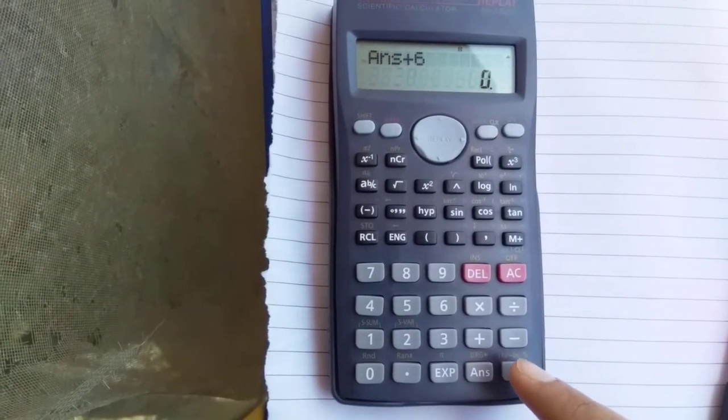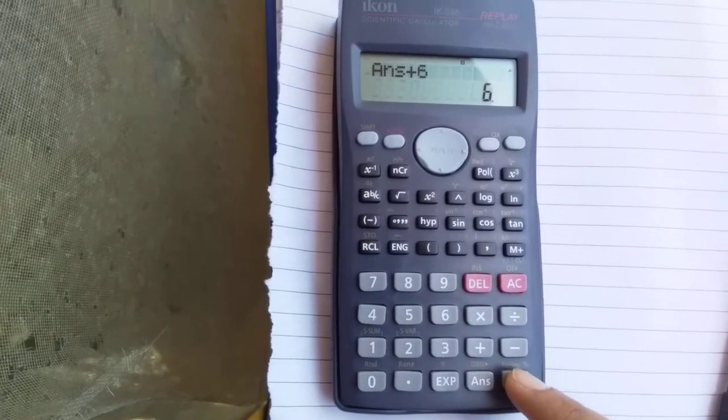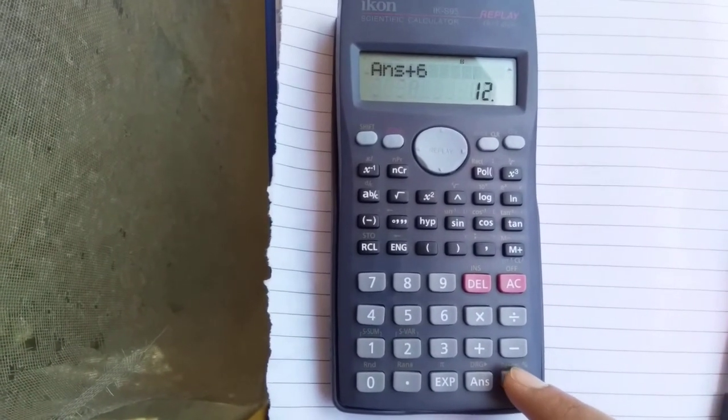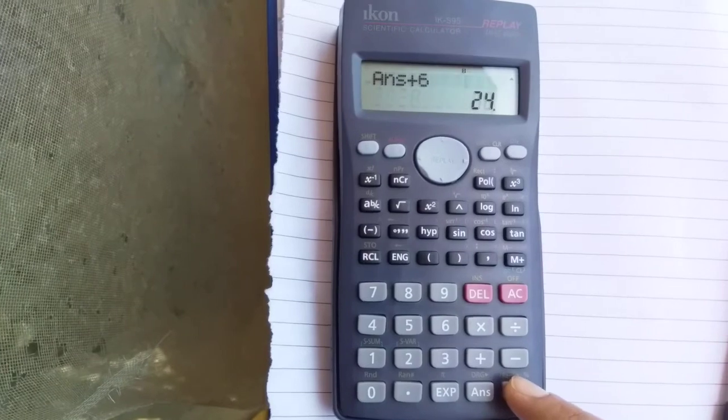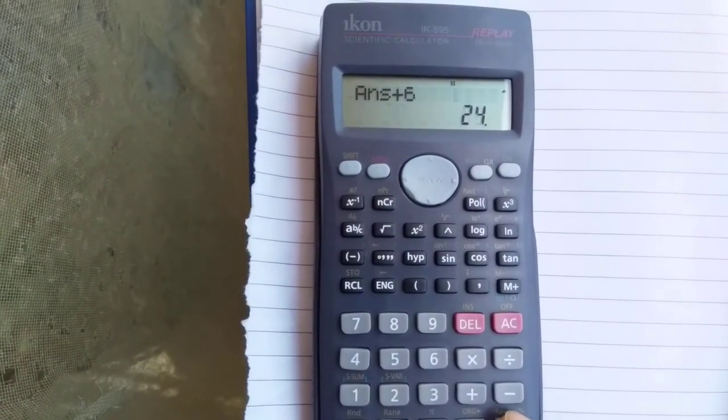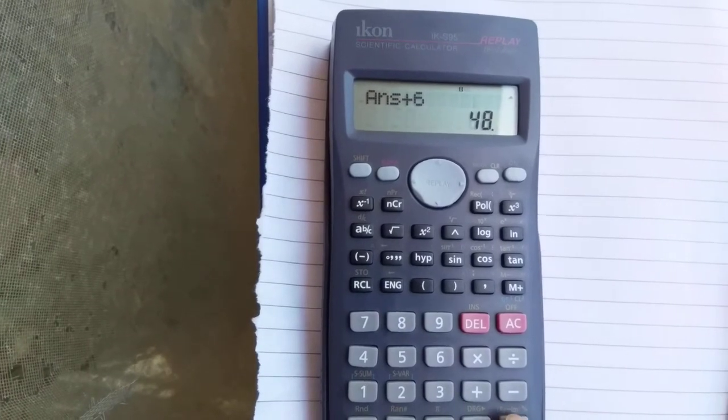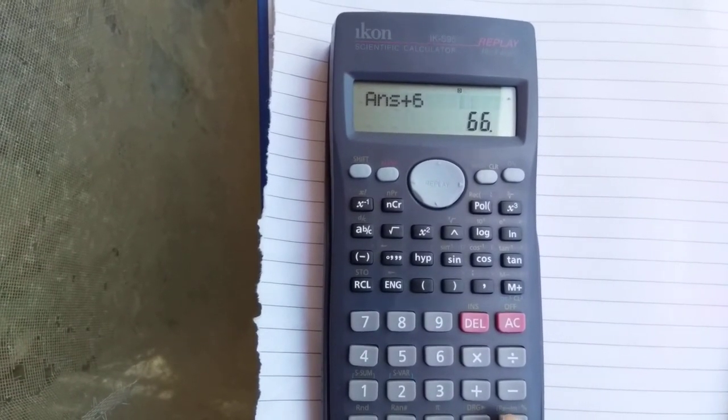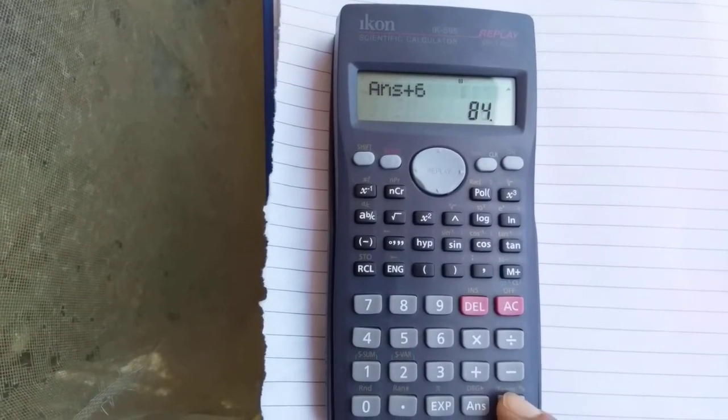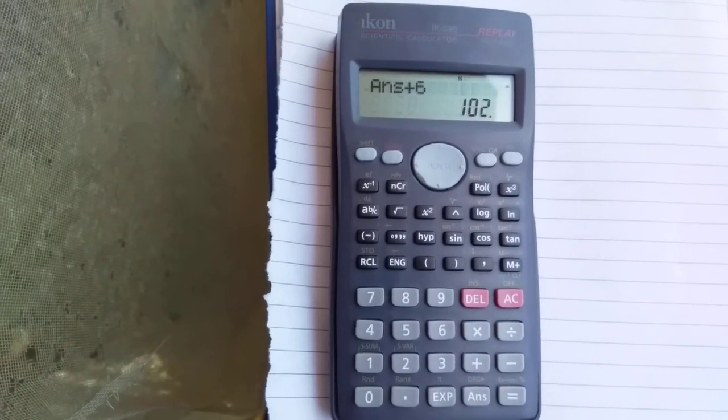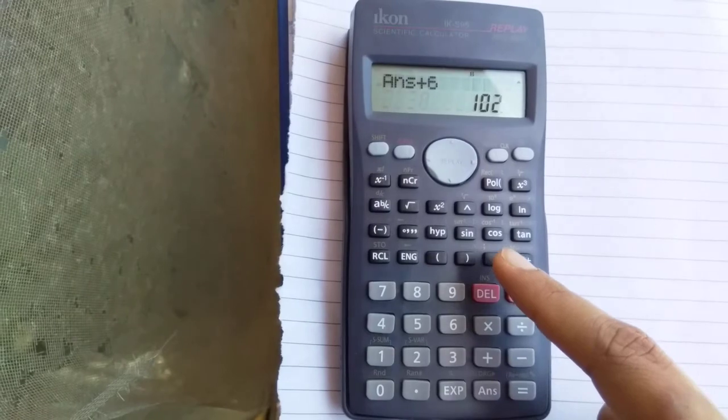Then press equal, you will see it will start showing you the table for 6. Again equal, equal, equal - you see it's showing you the multiplication table for 6. There you go guys, so it's very easy. You can use it in your daily life, it's just a normal calculator trick.